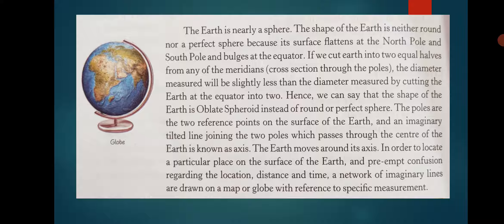The line which divides the earth into two equal halves is known as the equator. This is the longest latitude and is numbered as zero degrees latitude. The half of the earth north of the equator is called the northern hemisphere and the southern half is called the southern hemisphere.